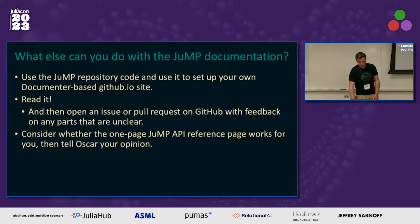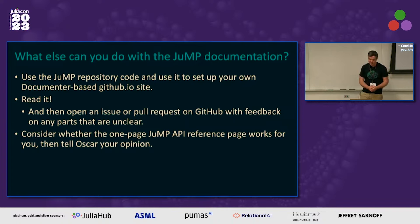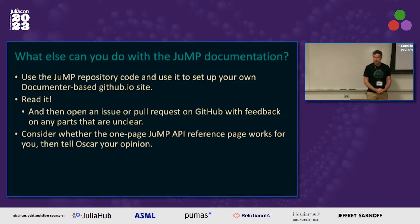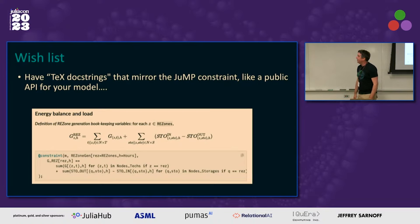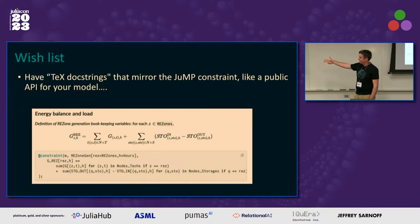What else can you do with the JuMP documentation? It's actually a really good example of generating a Documenter.jl-based GitHub pages site. So even if you don't want to use JuMP, have a look at it for great examples of how to generate your own Documenter stuff. Read it, please. Open an issue or pull request if you have any feedback or find parts that are unclear. Have a look at the one-page JuMP API reference and tell Oscar what you think — he's open to changing it. My wish list: I wish I could have LaTeX doc strings that work without having to manually do that.